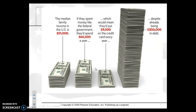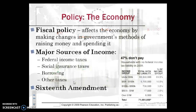If you look at this graph, the median income of an approximate family is $51,000 plus or minus a few thousand. If they spent money like the federal government does, they would be spending about $60,000 a year — well over their budget — which means $9,500 on a credit card every year, despite already being $300,000 in debt. An American family has to somewhat live within its budget, but the government doesn't, and that's been a major criticism conservatives have put forward.